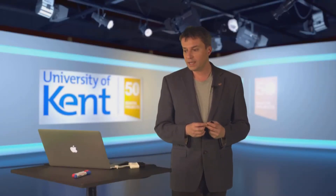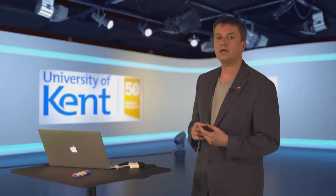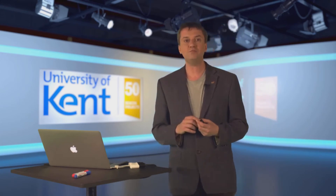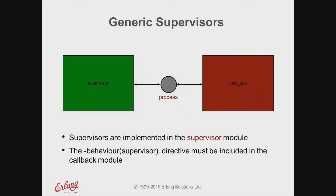In OTP, the generic supervisor behaviour module is called, surprisingly enough, supervisor. It contains all of the generic code. The callback module can have whatever name you want — in our example we're calling it calc_sup — and it must include the behaviour supervisor directive.